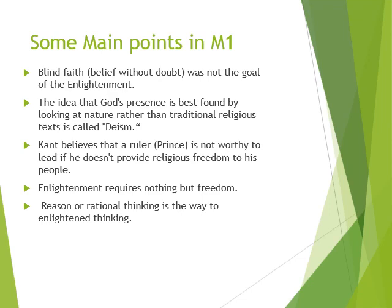Another key idea is that God's presence is found by looking at nature rather than traditional religious texts, and this is called deism. Deism is a movement that believes we can find God if we look at nature and count the blessings in our lives — even a person who is illiterate doesn't need to read texts to know that there is God. Kant also believes that a good ruler is not worthy to lead if he doesn't provide religious freedom to his people. Freedom to choose how to practice religion is one of the most important things Kant asks for. The Enlightenment in general requires freedom, and it also requires rational thinking — the use of reason and our minds.